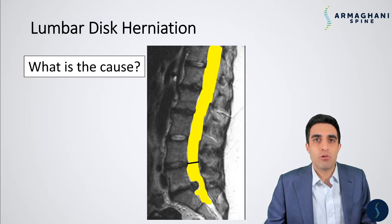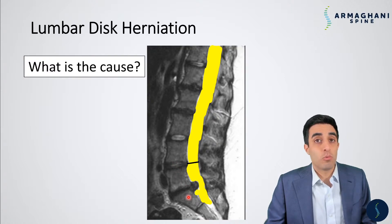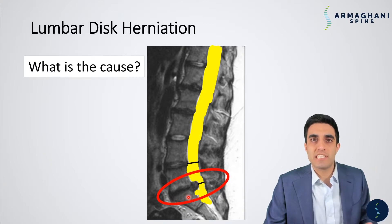The L4 bone is here, L5 is here, so the L4-5 disc is this disc. Below L5 is the sacrum, or what we call S1. You can see there is a little bit of compression in this area. This can cause severe compression of the nerves as they cross that disc, which causes the symptoms — discomfort in the buttock, legs, or feet — that you could be experiencing.